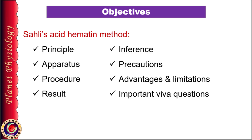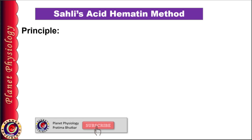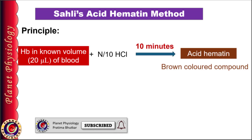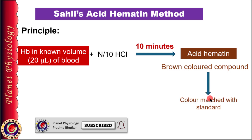Let's start with the principle of Sahli's method. In this method, hemoglobin in a known volume of blood is converted to acid hematin by mixing it with N/10 HCl, i.e. 0.1 normal hydrochloric acid. The brown color of acid hematin is then diluted until its color matches with the standard plates. When the color matches with the standard, the reading in the tube directly gives the hemoglobin value in the blood.